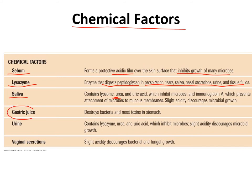Gastric juice is a really important chemical factor because it has a very low pH, which kills bacteria when they get to the stomach. Urine also contains lysozyme. Vaginal secretions tend to be acidic — and remember, acid is one of the ways to control microbial growth. So several chemical factors — sebum, saliva, gastric juice, and vaginal secretions — tend to be slightly acidic, which discourages microbial growth.